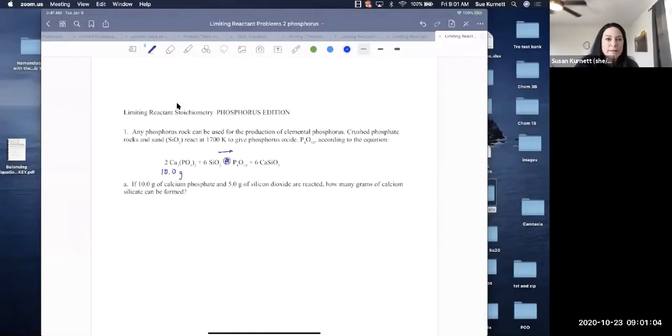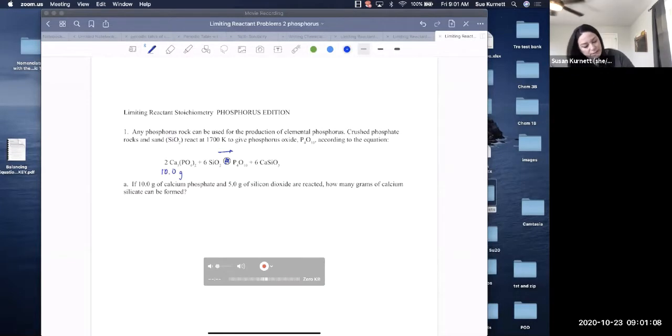Let's start at the top. Here we go. So this is an arrow. What if we have 10 grams of calcium phosphate? Oh, you can't see my screen. Hang on. And five grams of silicon dioxide.